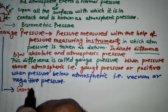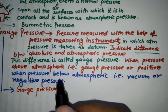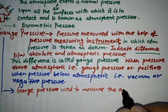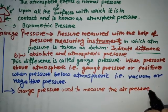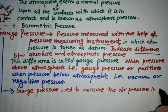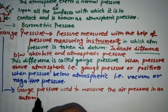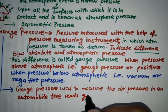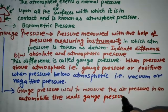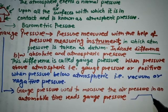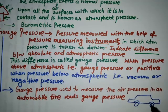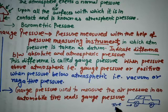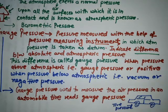The importance of gauge pressure is that it is used to measure the air pressure in an automobile tire. The tire pressure reads gauge pressure. This tire pressure is basically measured with the help of an instrument.